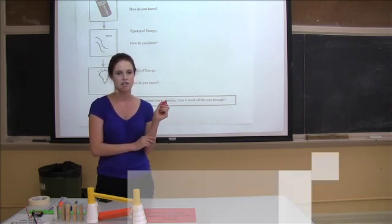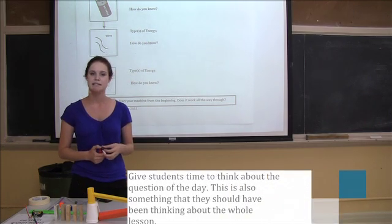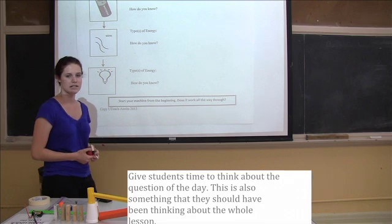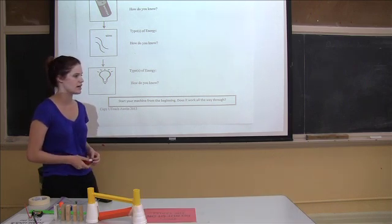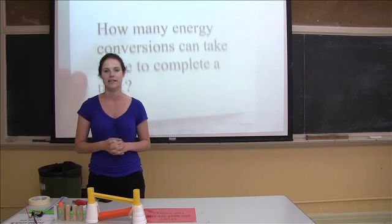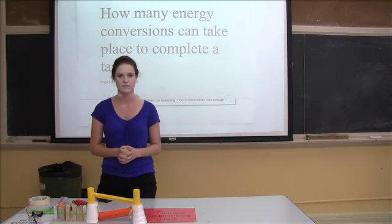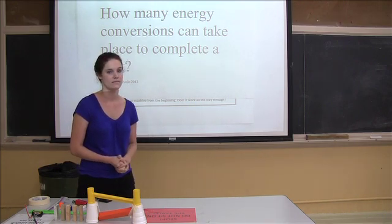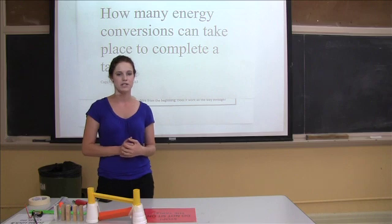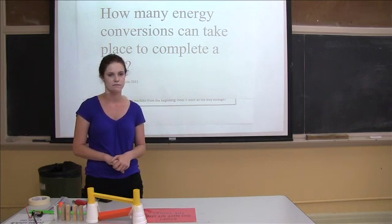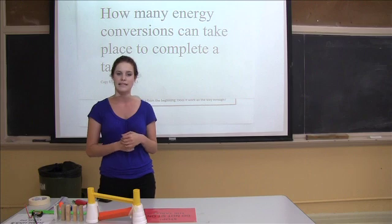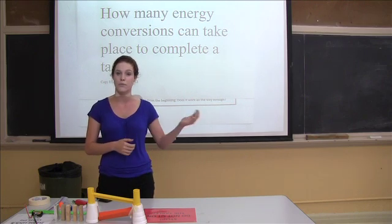So let's go back to our question of the day. Turn and talk with your partners: how many energy transformations can take place to complete a task? Think about specific examples we've seen throughout the day. Does anyone have an answer? It depends — the fan and the flashlight had four, and our machines had seven or so. How do you know that energy was transformed from one object to the next? You see changes. So the amount of energy conversions depends on what we're looking at. The important point is that energy doesn't disappear — it's constantly being converted from one form to another.